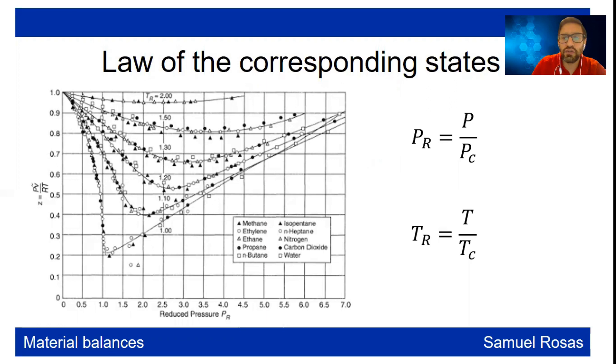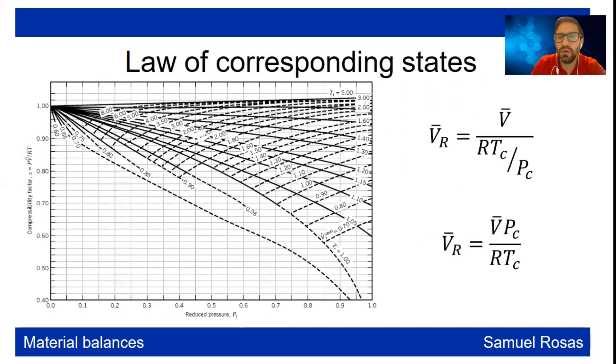So in those cases where the volume is the one that you have, you can calculate the pseudo-reduced volume, which is the molar volume over R times temperature critical over critical pressure. Or in other words, you can multiply the molar volume times the critical pressure over RT.